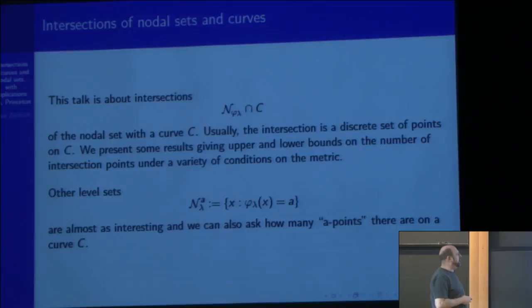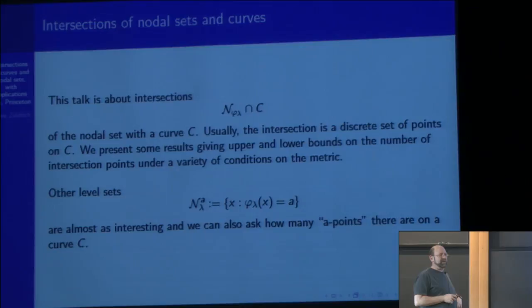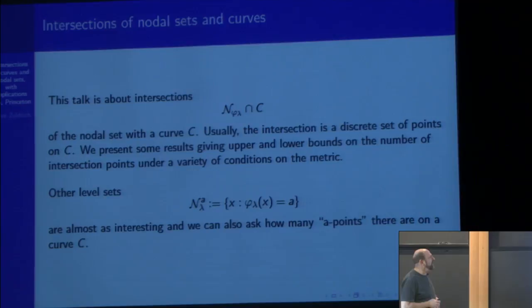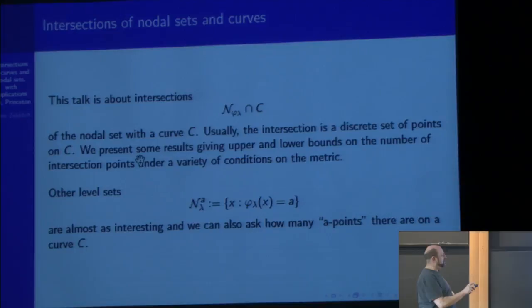My talk is basically about the intersection of a nodal set with a curve. It's striking to me how much of the technique in this area is basically studying intersections of nodal sets with curves, which is completely orthogonal to the papers of Logunov and Logunov-Malininikova. I'm trying to pinpoint exactly how their techniques are different from ours. A lot of what we're doing is about intersections.